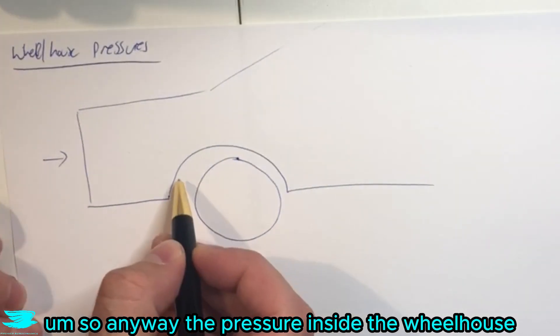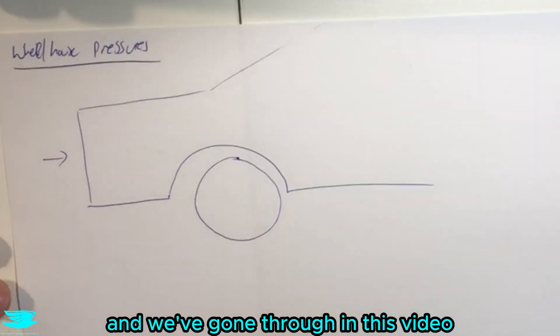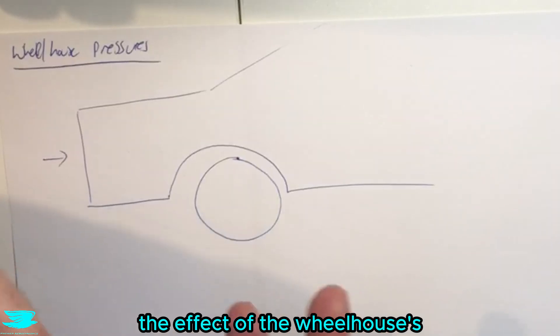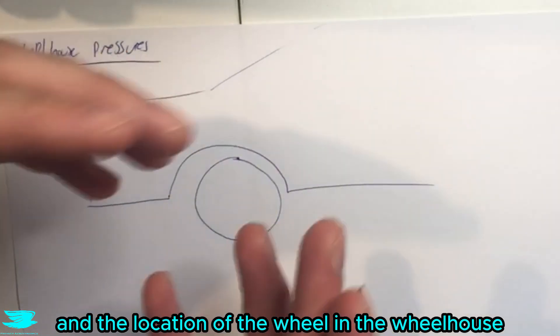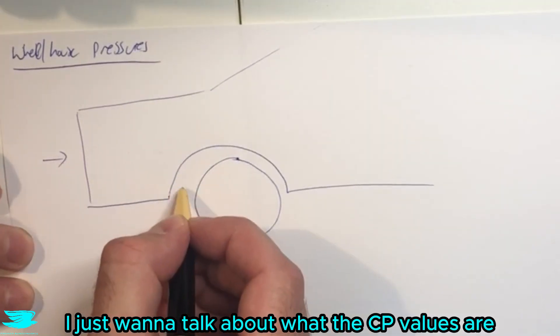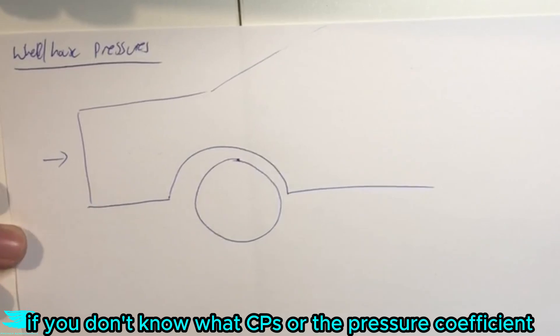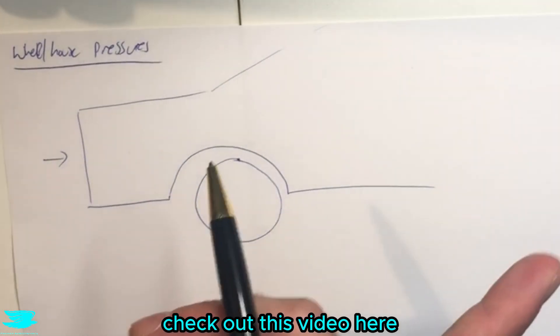So anyway, the pressure inside the wheelhouse, we have obviously the wheelhouse here and we've gone through in this video the effect of the wheelhouse general shape and the location of the wheel in the wheelhouse. But for this one, I just want to talk about what the CP values are on this face here. And if you don't know what CP is, the pressure coefficient, check out this video here.